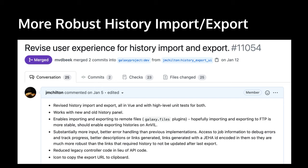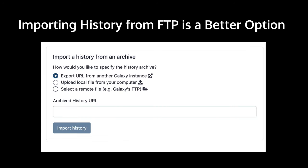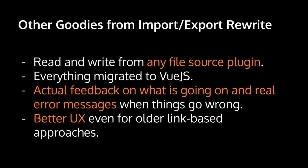With that infrastructure in place, we were ready to revise the user experience around history import and export — significantly overhauling this at the end of 2020. Histories can now be written to Galaxy's FTP directory, a long-discussed and desired feature. Likewise, you can import from FTP directory or any remote file source plugin. This rewrite also migrated everything to Vue.js, provided actual feedback and real error messages, and the whole UI — even for the old link-based approaches — is much more robust and clear now.